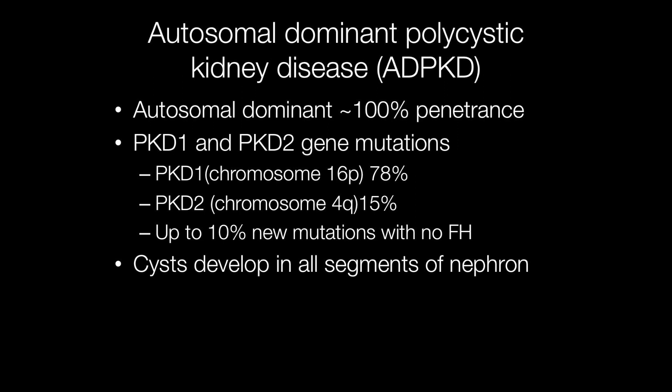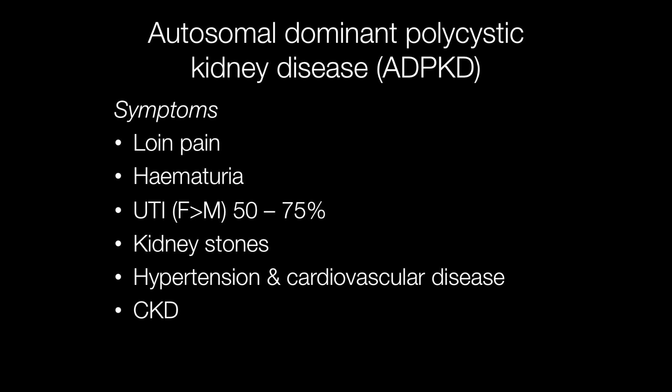The cysts develop in all segments of the nephron. Presenting symptoms include loin pain, haematuria, and urinary tract infections, which are more frequent in females than males and occur in 50-75% of patients with ADPKD. Other problems include kidney stones, hypertension and cardiovascular disease, and chronic kidney disease.